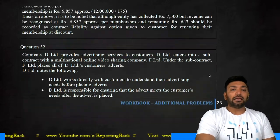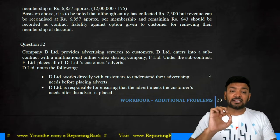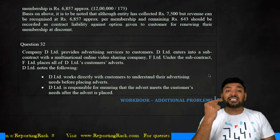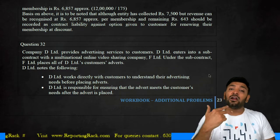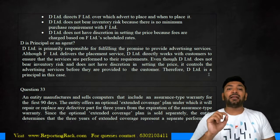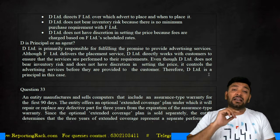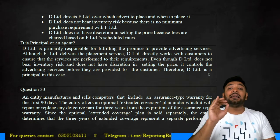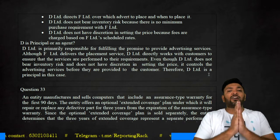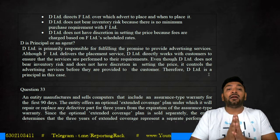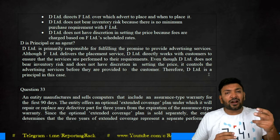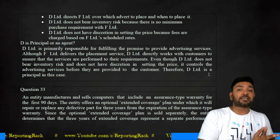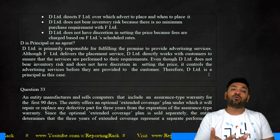However, looking at the other indicators: first, D directly interacts with the customer to understand their advertising needs and is responsible for ensuring the advertisement meets those needs. Second, D directly communicates with the customer to understand their requirements. Third — and most importantly — D directs F Limited over which advertisement to place and when to place it. These first three points are more than sufficient to conclude that D is a principal, not an agent. Though the last two points might suggest otherwise, in substance the first three outweigh them. Applying substance over form, D is categorized as a principal.